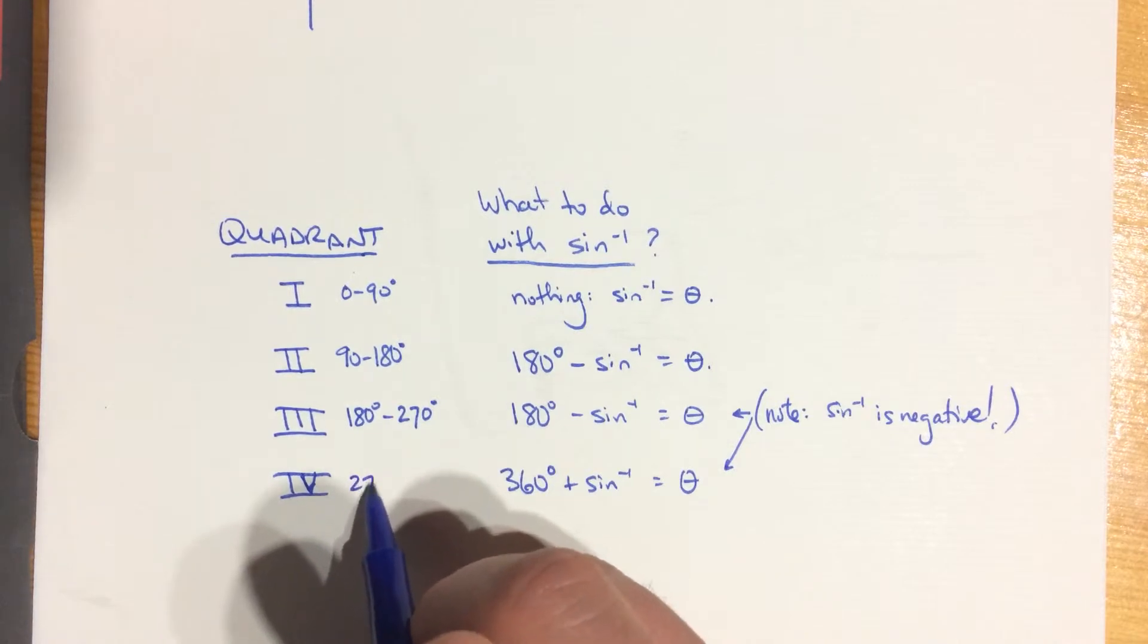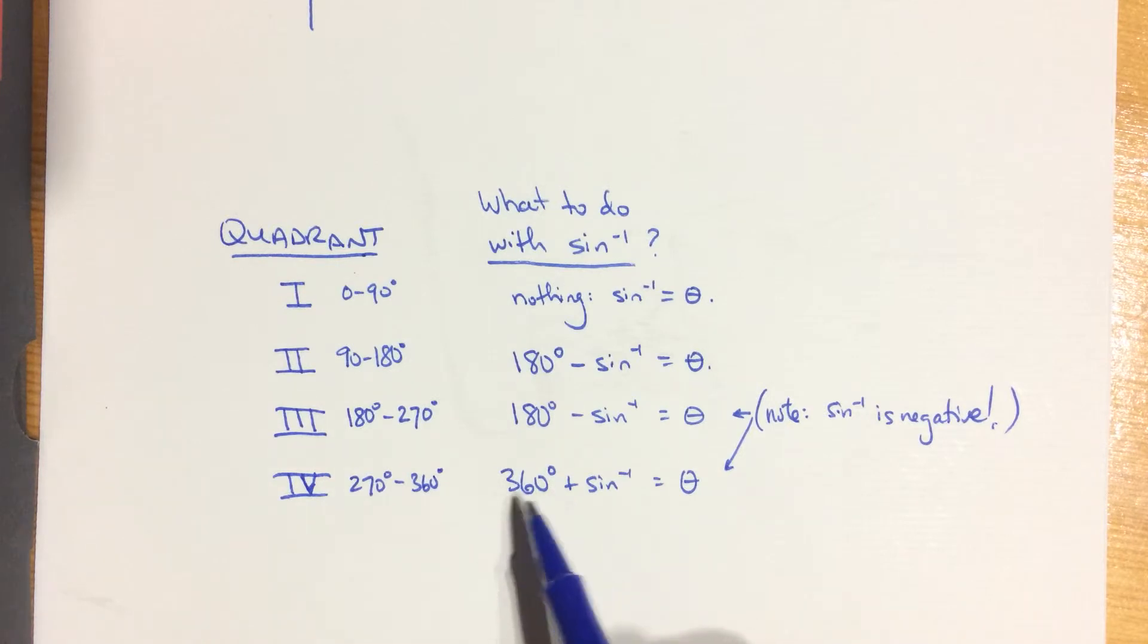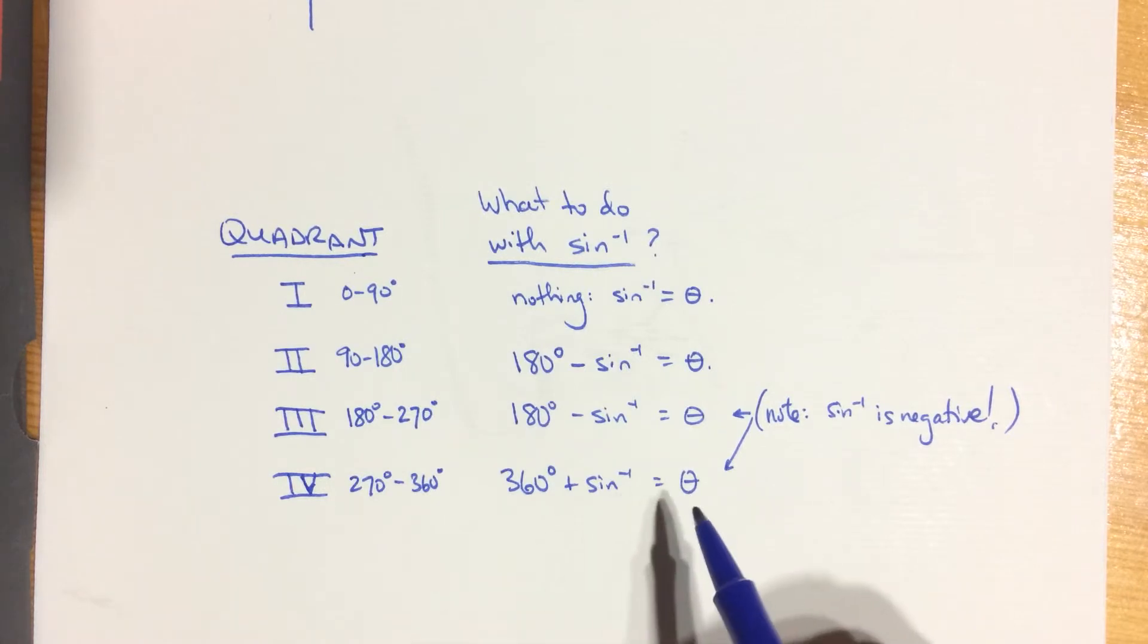And the last chunk, if you're in the fourth quadrant, from 270 up to 360 degrees, you take 360 and you add on that negative value that you get from your sine inverse function. And that will give you your angle theta.